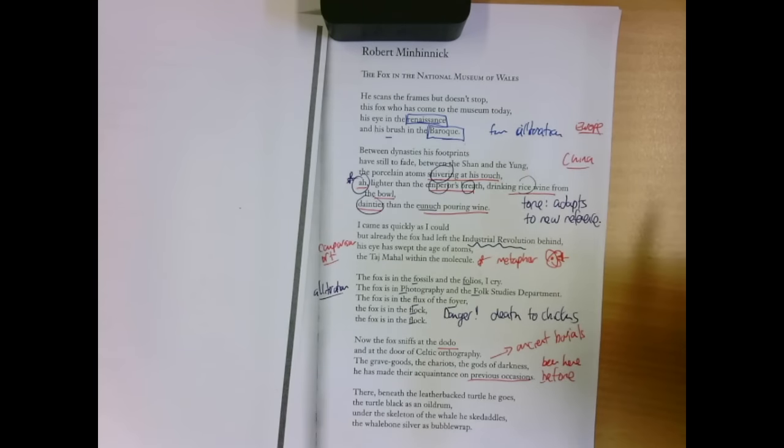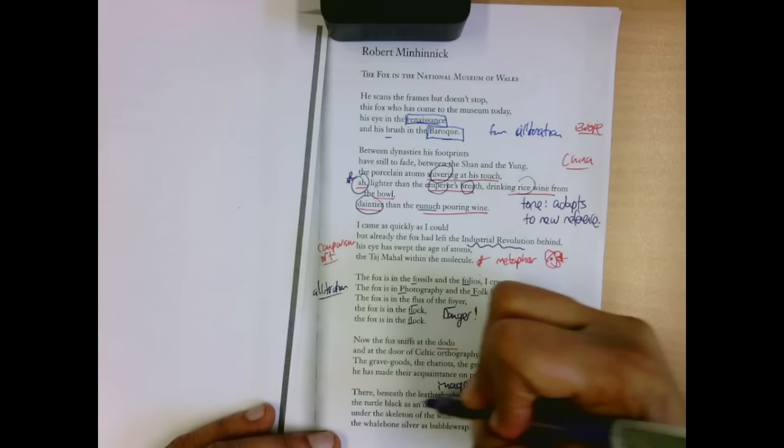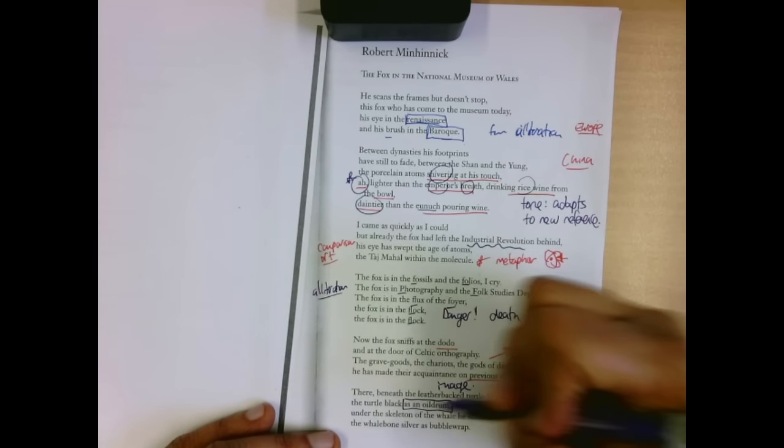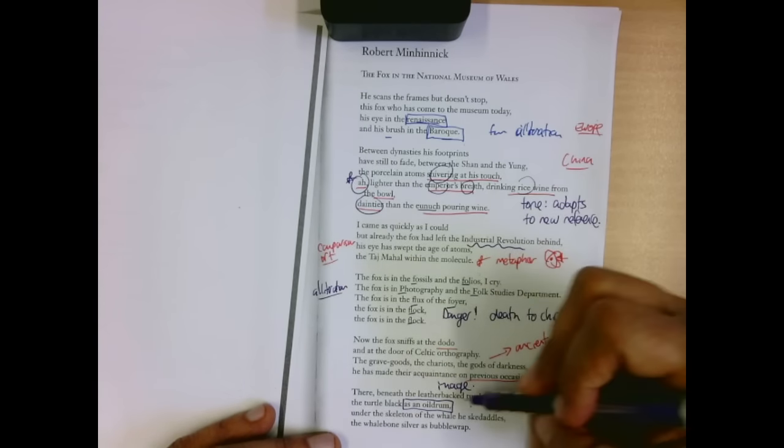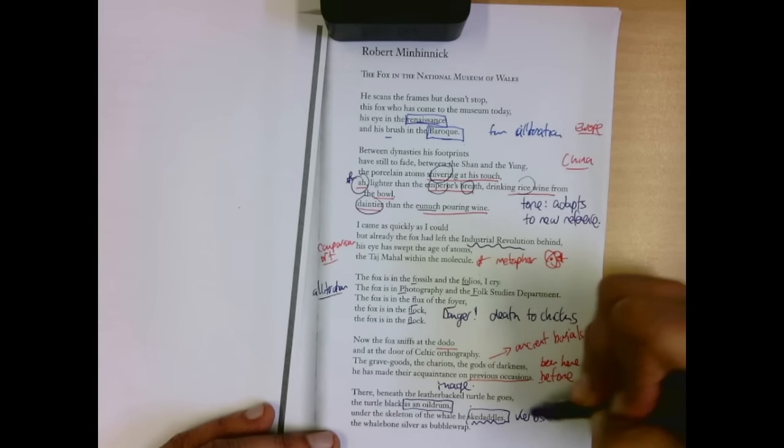There beneath the leather-backed turtle. I love the imagery here, the image of this strikes me. And the simile, black as an oil drum. Under the skeleton of the whale, he skedaddles. The verbs emphasize the fun and the movement.